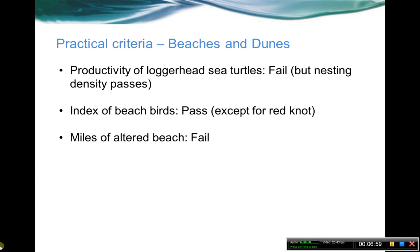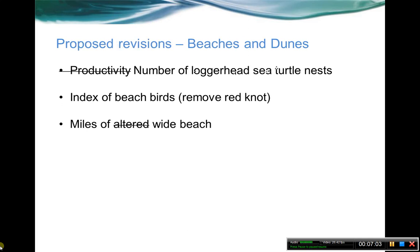So that's the practical criteria for the three indicators. Here are the proposed revisions: change the loggerhead sea turtle metric to just number of loggerhead sea turtle nests, so we can get that across the whole geography. For the index of beach birds, keep it as is except remove red knot until those data are ready. And then for miles of altered beach, trying to get at the same idea from a slightly different angle — look at miles of wide beach. We explored different options for how to capture the altered beach concept we couldn't measure directly. When you put in jetties and harden the shoreline, you basically lose your beach — the beach gets narrower. So we have a slightly modified version, miles of wide beach, trying to separate wide beaches versus more narrow beaches as the measure of alteration.